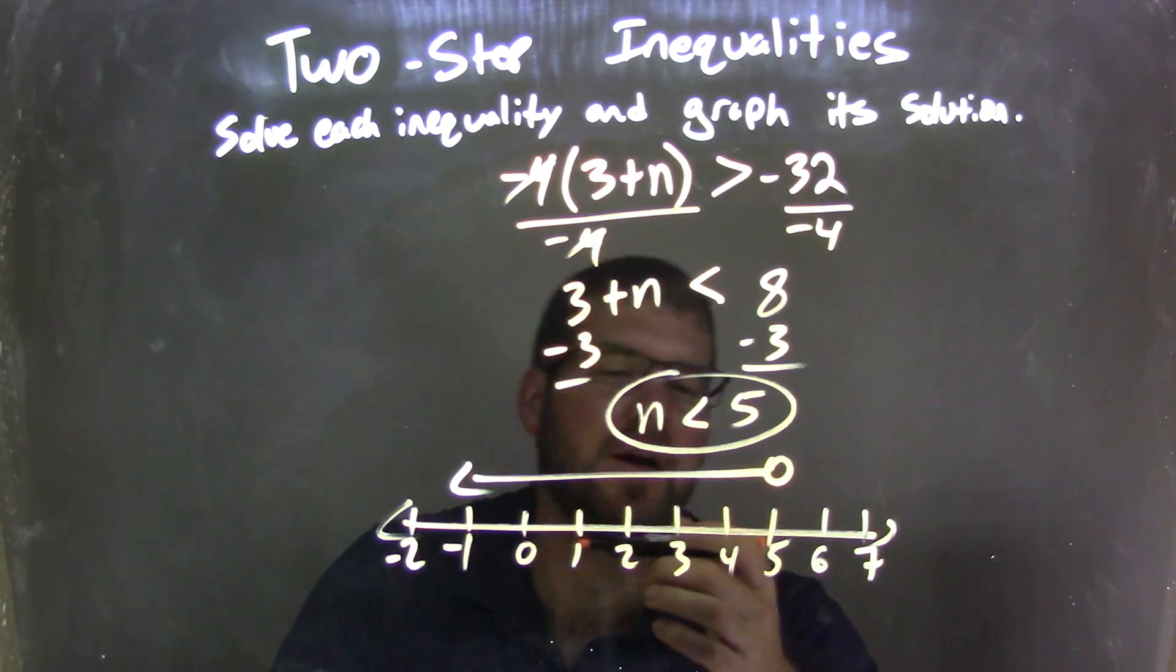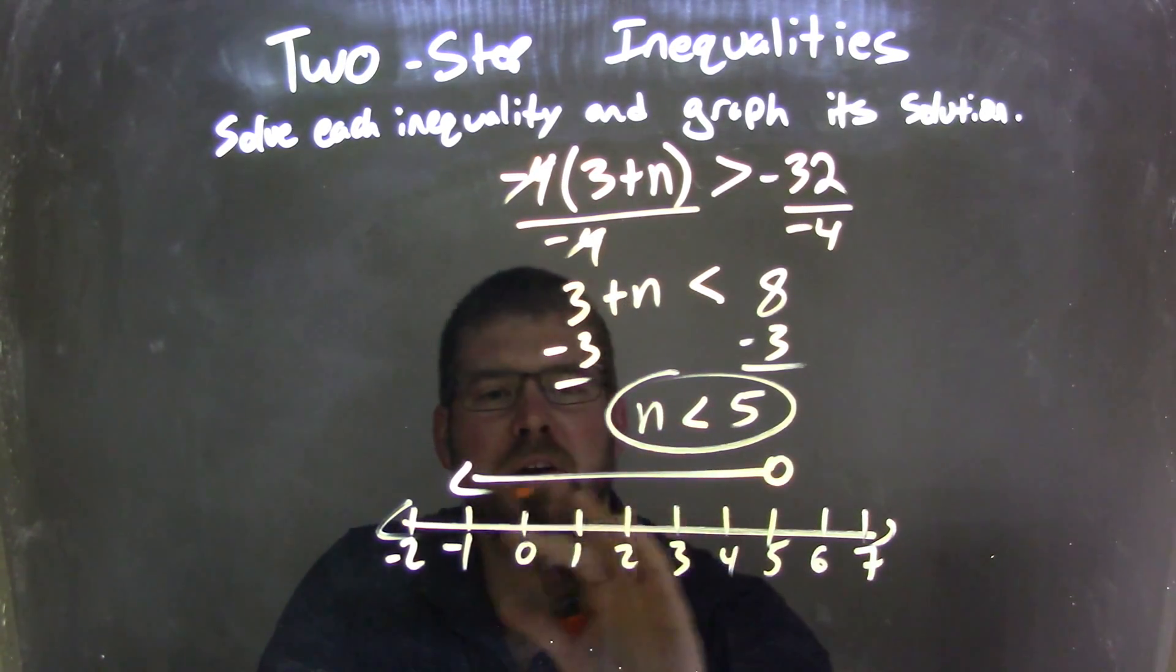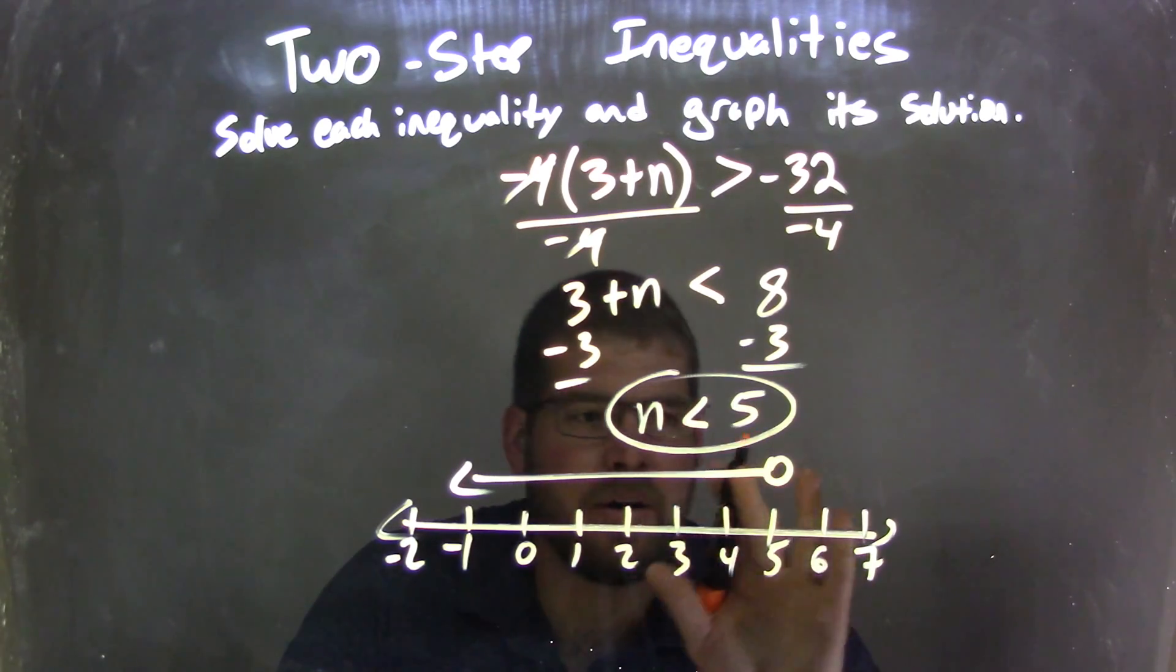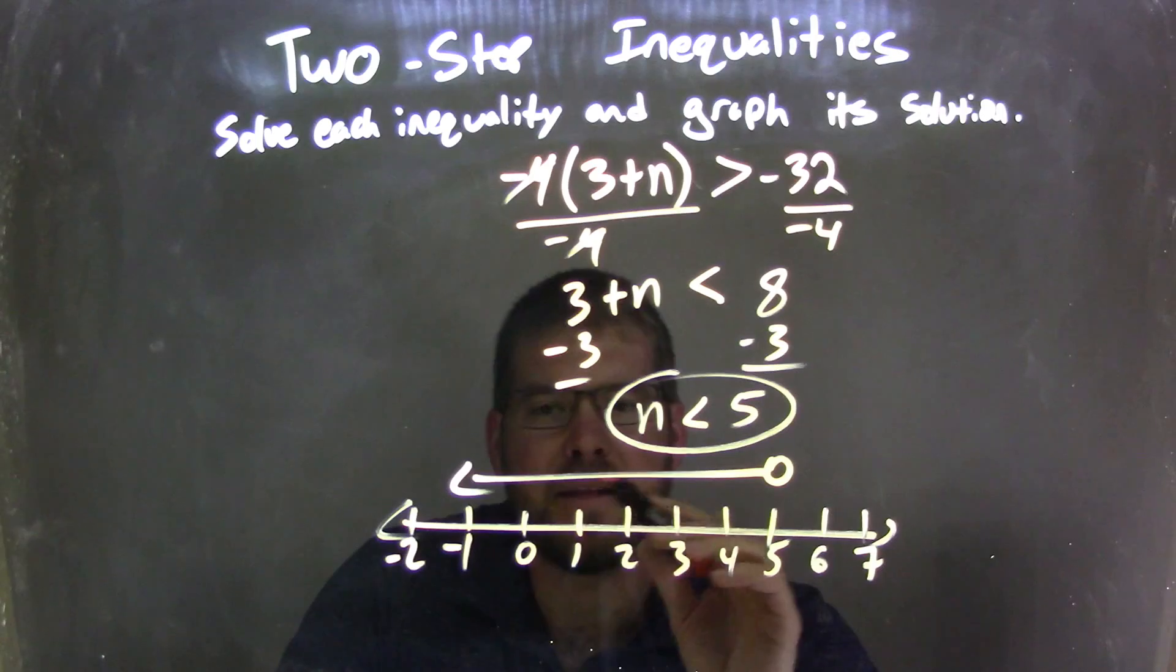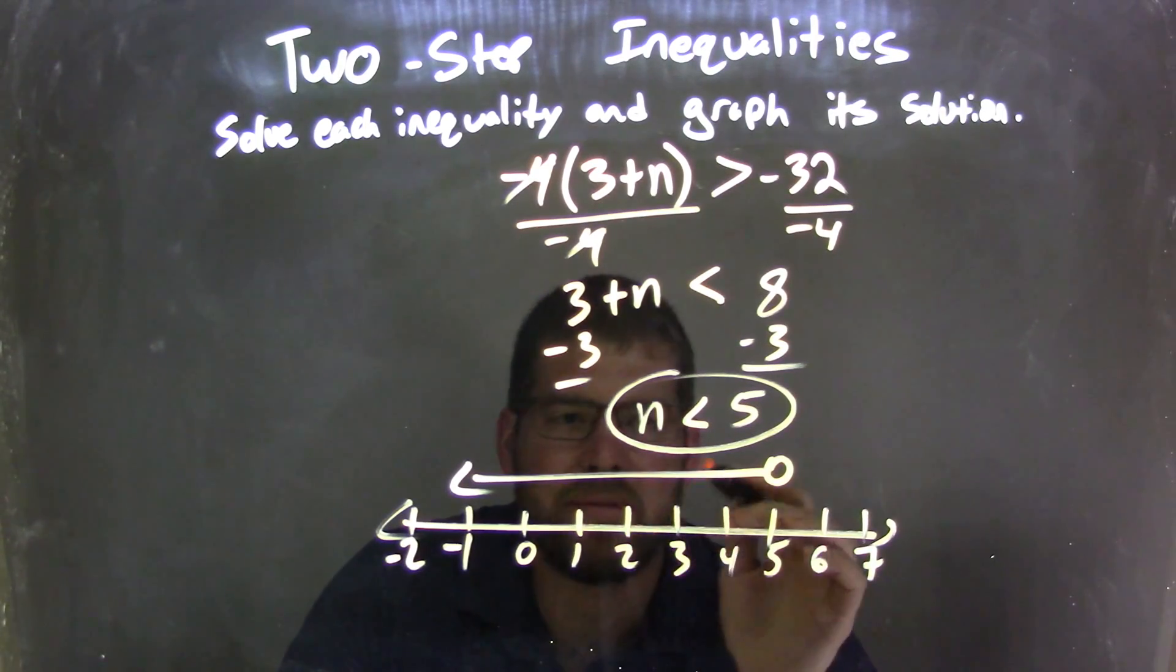And so now all these values here that are covered by our graph, like the 0, 1, 2, 3, 4, 2.5, all those values are true solutions, right? 2.5, if I pick that value right here, 2.5 is less than 5, true statement would be fantastic.